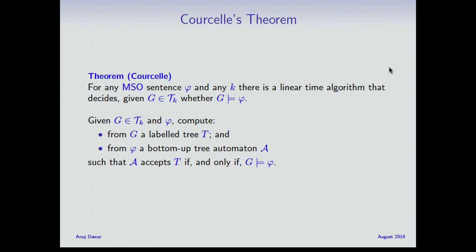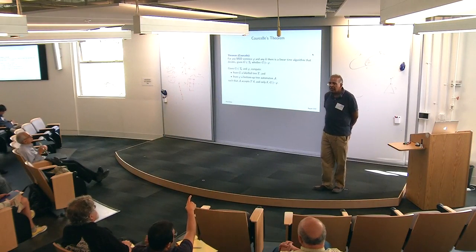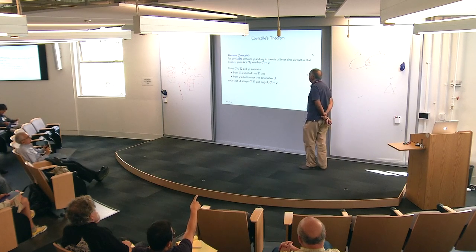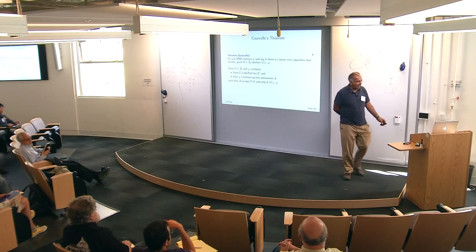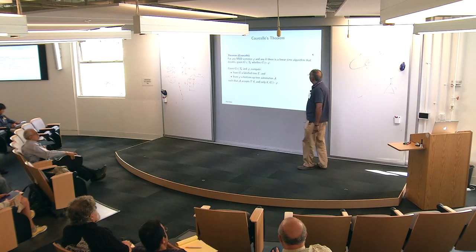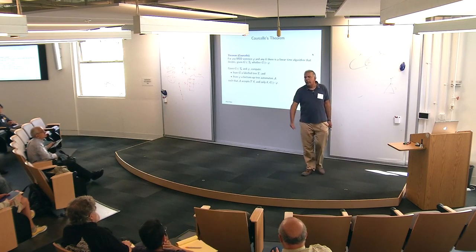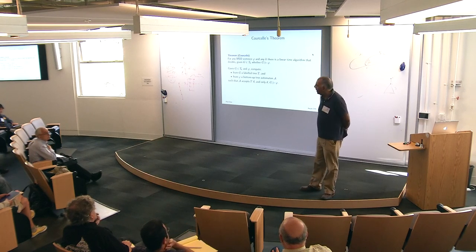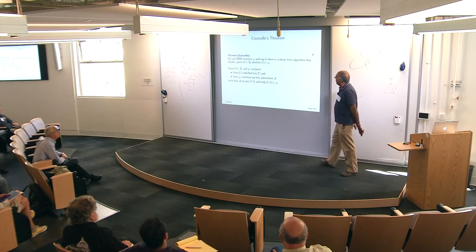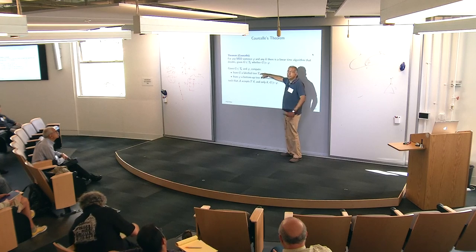The best complexity we know in the parameters k and formula φ is: in k it's single exponential, and in the quantifier rank p of φ it's non-elementary. So if you fix the formula φ, the computation depends on k exponentially but is linear in the graph size. There's a lot of work that goes into this theorem. I think this is the point where I'll stop and let you take a breather.